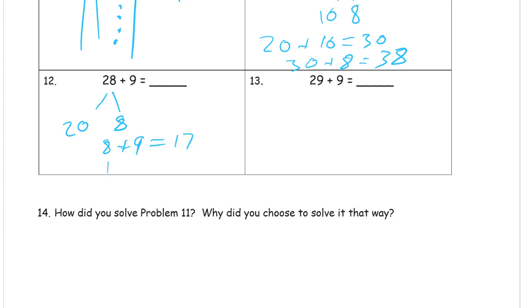Then I add the 20 to that. 17 plus 20. That's just 2 more tens to the 17. Makes it 37.